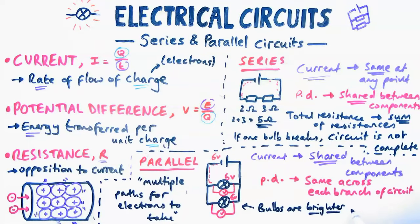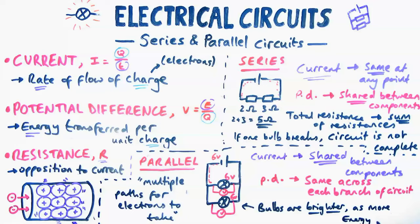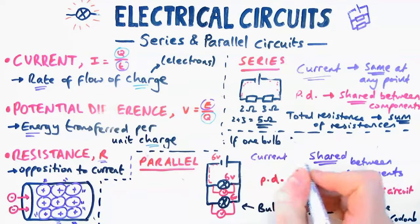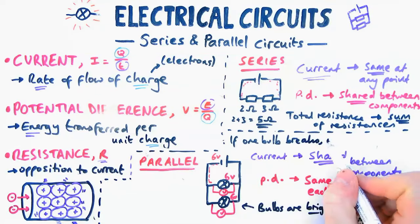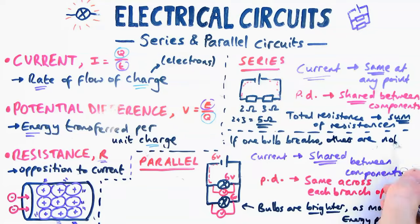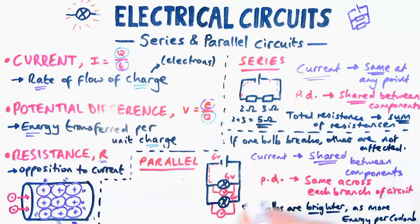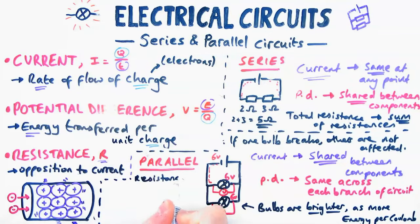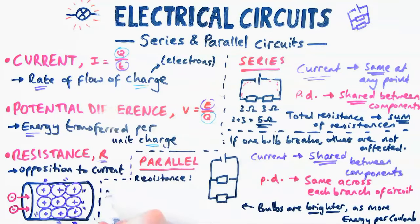Now, one positive to parallel circuits is that, number one, you can make the bulbs brighter. If you add more bulbs in series, they become dimmer because they're sharing voltage. But here, they maintain their brightness because there's more energy per coulomb than in a series circuit. Another advantage is if one bulb breaks, the other bulbs are not affected. So if one of these branches, the circuit is broken, the other branches are all fine. The electrons can still flow.